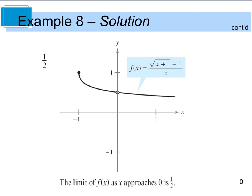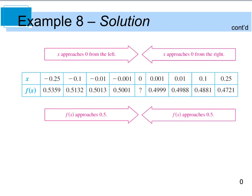As we come in from the left and from the right, we are approaching that 1 half mark. You may even go in and look at your table, and you'll see that as we're coming in from the left, our y values are getting closer and closer to 1 half. Likewise, as we come in from the right, our y values are getting closer and closer to 1 half. So these are two additional ways that you can confirm that your limit was calculated correctly.